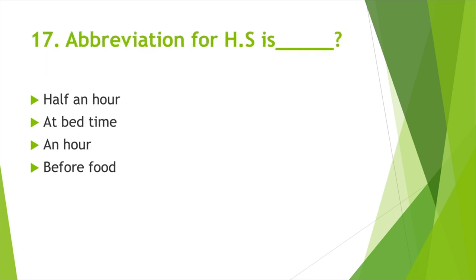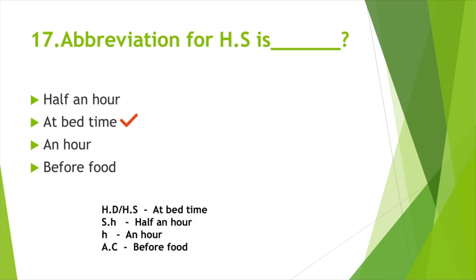Abbreviation for HS — Option A: Half an hour, Option B: At bedtime, Option C: An hour, Option D: Before food. Answer: Option B, At bedtime. HD or HS = at bedtime; SH = half an hour; H = an hour; AC = before food.